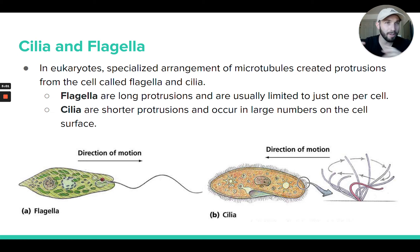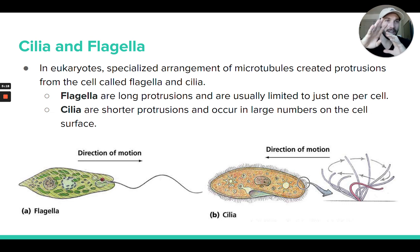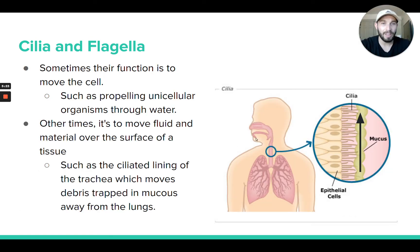Cilia can be used to move a cell in its environment, especially in certain types of single-celled organisms like prokaryotes or protists. Cilia can also not just move the cell — sometimes it's a stationary cell that does have cilia, and the cilia helps to move things across the surface of the cell. A good example of that is in your trachea — the tube that brings air to your lungs. Inside the trachea, it's lined by cells that do have cilia.